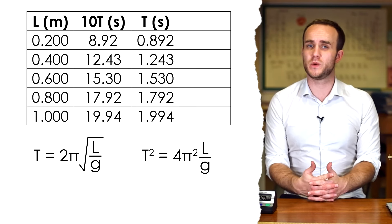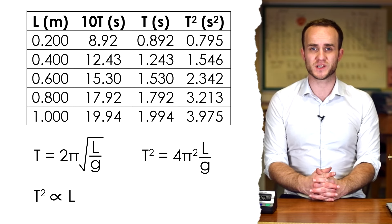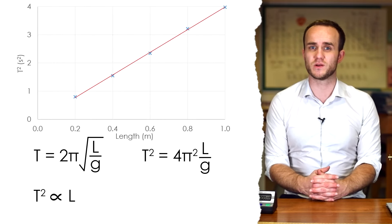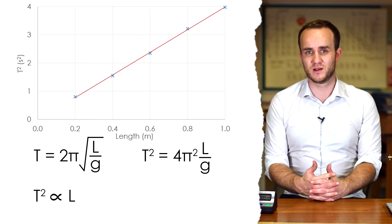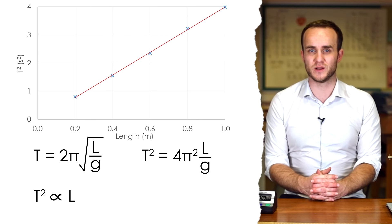Squaring the whole equation though, we can see that t squared is proportional to l. So that's what we're going to draw on our graph: t squared on the y-axis and l, length of the piece of string, on the x-axis.